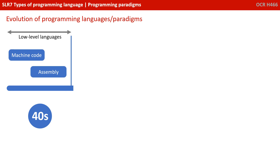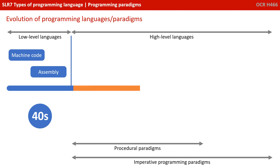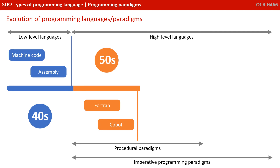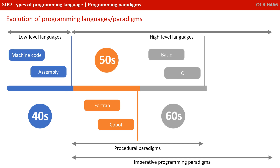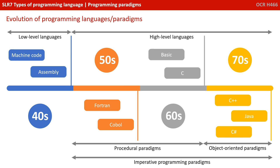On the screen now is a very abstracted overview of the evolution of programming languages and paradigms. In the very early days we had low-level languages, including machine code — ones and zeros — and then assembly languages using mnemonics. Next came all the high-level languages, including procedural paradigms such as FORTRAN and COBOL in the 50s, followed by BASIC and C, and then more recently object-orientated paradigms such as C++, Java, C Sharp, etc.